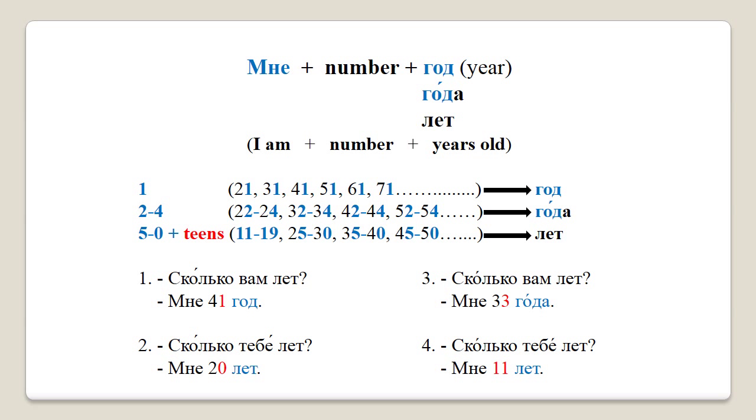For all other numbers — five, six, seven, eight, nine, zero, plus all the teen numbers — we finish with лет. Let's have a look at some examples. I'm going to read each dialogue first and then translate it.